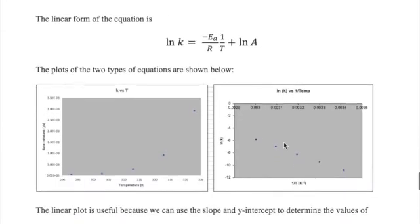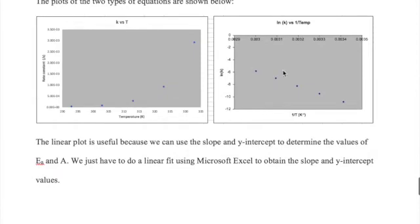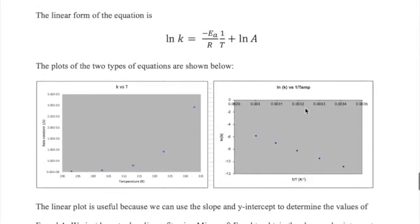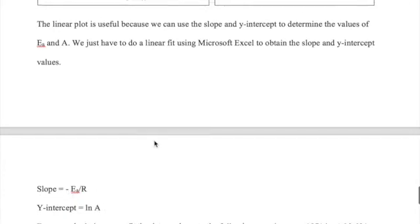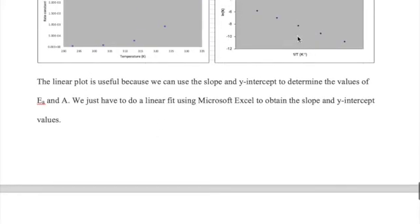The plot of these two forms of the equation are shown below. Now the reason we use the linear form is because we can easily fit the plot to a line equation. We can see from the linear form of the equation that the slope of the line is just equal to negative EA over R while the y-intercept is equal to ln A. That allows us to solve for both EA and A if we can fit the linear form of the plot.